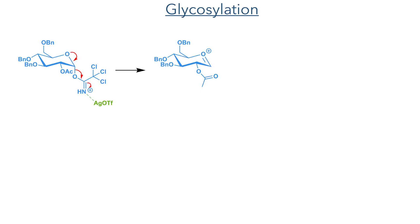With peysonosol now complete, they then turned their attention to the synthesis of the carbohydrate moiety of the molecule. This started with the glycosylation of the compound using a glucose trichloroacetimidate donor that had an acetate protecting group at the 2 position and benzyl ethers at the 3, 4 and 6 positions. The trichloroacetimidate was activated by silver triflate, which coordinates to the nitrogen promoting the elimination of trichloroacetamide and the formation of an oxocarbenium intermediate.